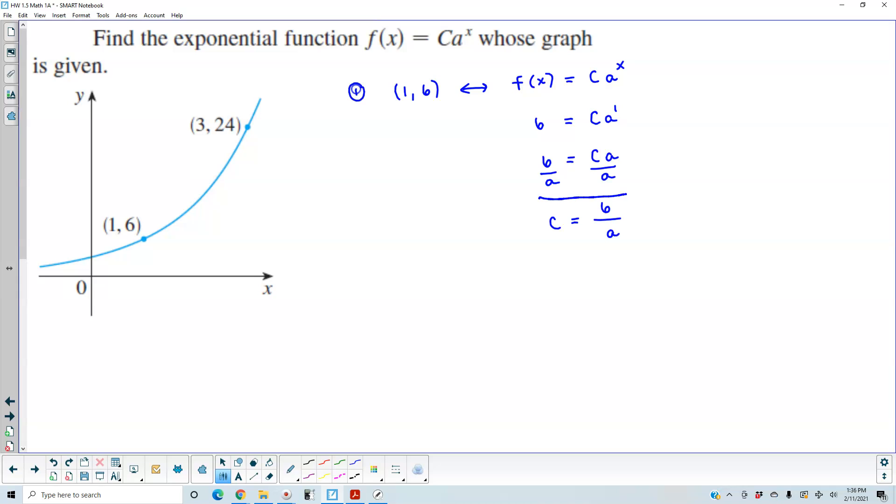Now that we know what c is equal to, we will now use the other ordered pair, which is 3, 24.